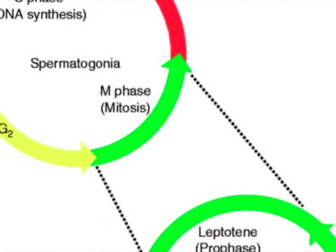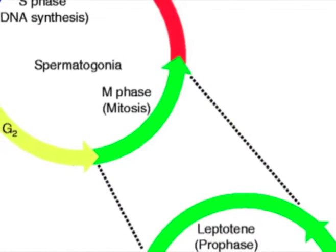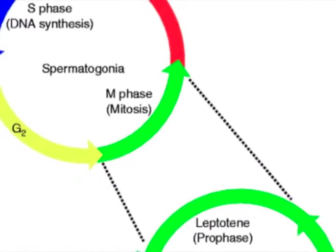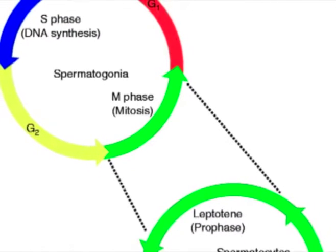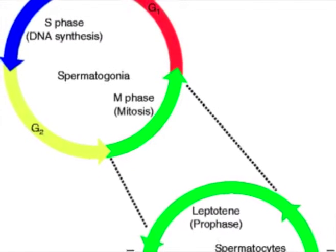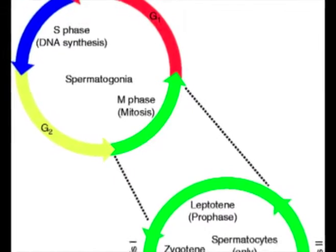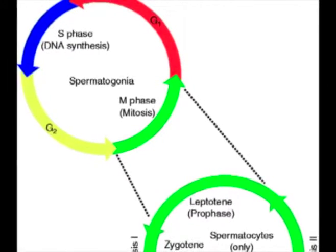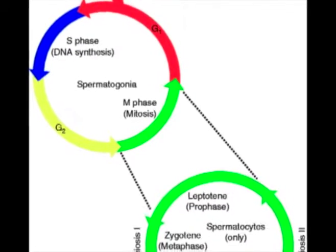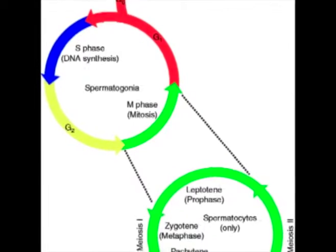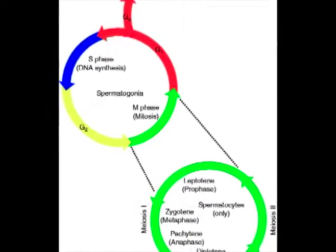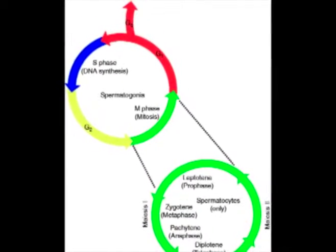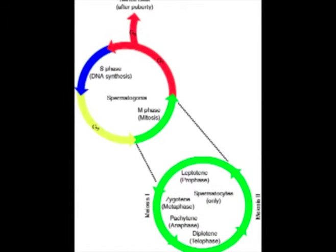M phase: A nuclear division, mitosis, followed by a cytoplasmic division, cytokinesis. The period between mitotic divisions — that is, G1, S, and G2 — is known as interphase.